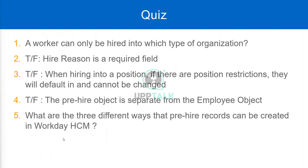What are the three different ways that pre-hire records can be created in Workday HCM? Manually — that's what we used as part of the training. Then using an integration with an ATS. Or it can be using the Workday recruitment module. Three different ways: manually, integration, and the Workday recruitment module. That's correct.